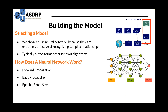Once we got the data ready, we were able to work on actually building the model. The first step was selecting the model type. Within machine learning there are plenty of different model types and algorithms available, but we ultimately chose to use neural networks, because neural networks are extremely effective at recognizing complex relationships between input and output data. Neural networks typically tend to outperform other types of algorithms, which was a huge factor since we wanted to design the best algorithm possible for the most accurate results.